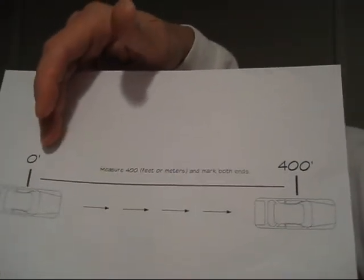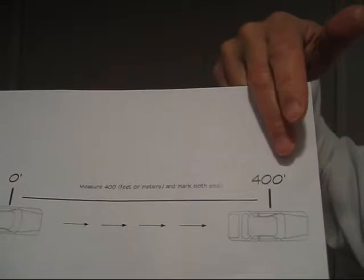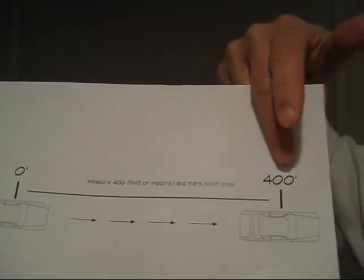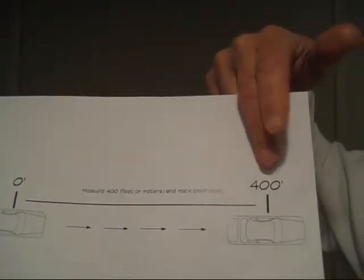With the meter installed in the vehicle, let's paint a line on the road that represents zero. Measure 400 feet away and paint another line for the stop line. So we'll have a start line and a stop line.